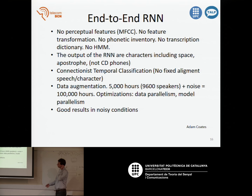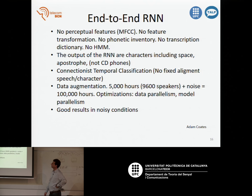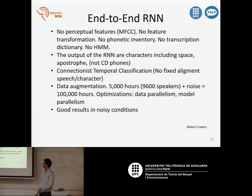The idea, as before, is not using specific features for speech like a spectrogram. There is no need in this Baidu system for the phonetic part. There is no phonetic transcription dictionary, and no hidden Markov model. There is no specific model with a hidden Markov model — they try to include all of that in the network.